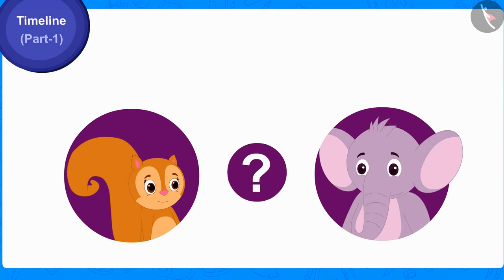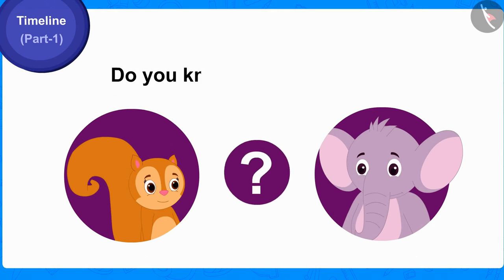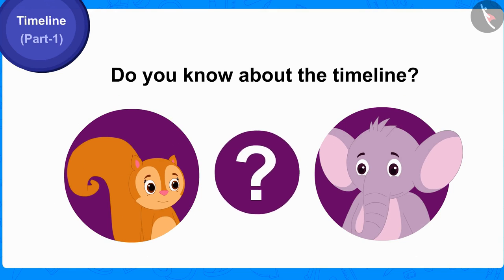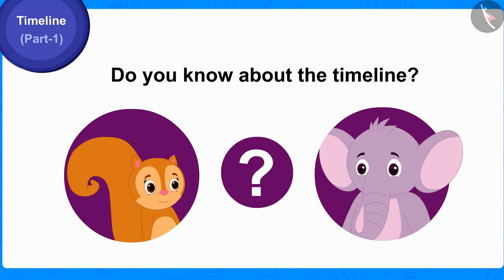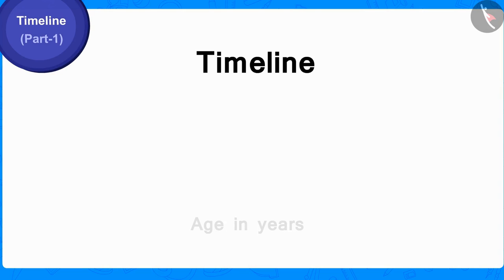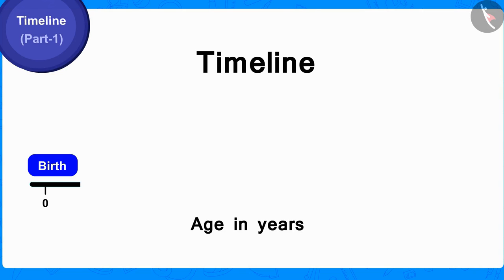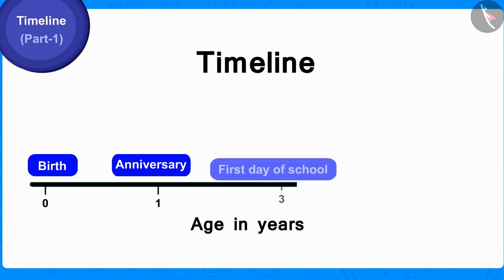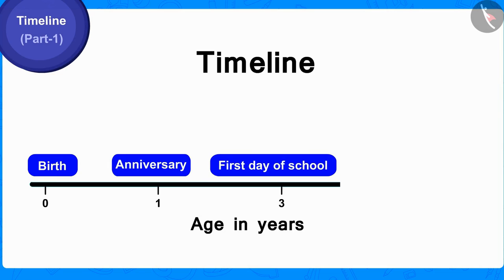Children, do you know about the timeline? That's alright. A timeline is a line on which we can depict the events that have happened in the life of any person in order of chronology.